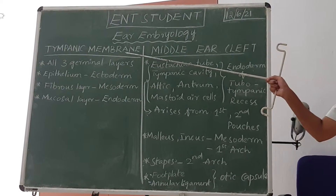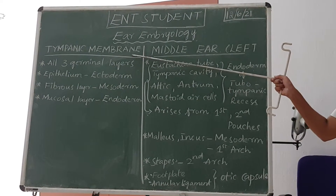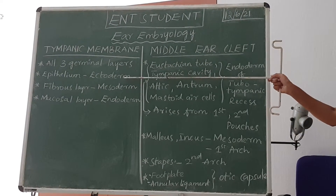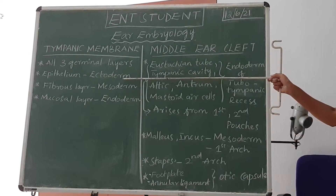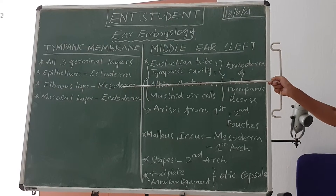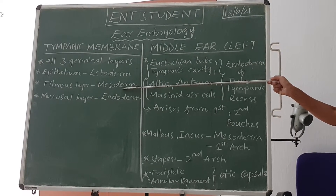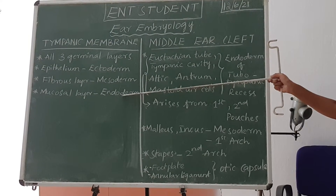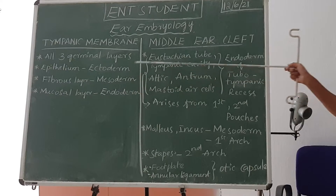The tympanic membrane develops from all 3 germinal layers. The epithelium is formed by ectoderm, the fibrous middle layer is from mesoderm, and the mucous layer is from endoderm. All 3 layers are very important.